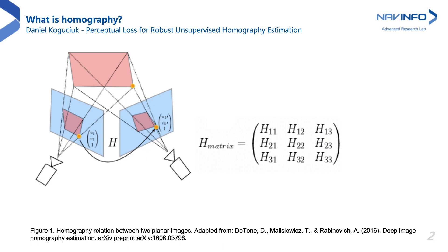Given a pinhole camera model assumption, a homography relates any two images of the same planar surface in space, or any two images produced by pure rotational movement of the camera. One image called a source can be transformed by a 3x3 homography matrix H, as if viewed from the viewpoint of the other image called target.